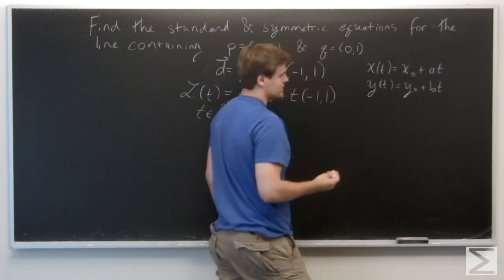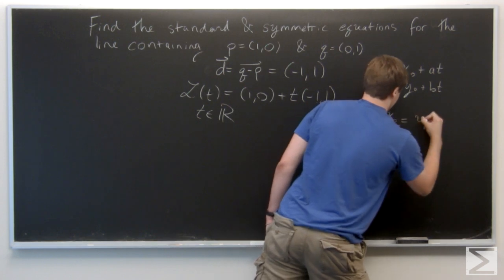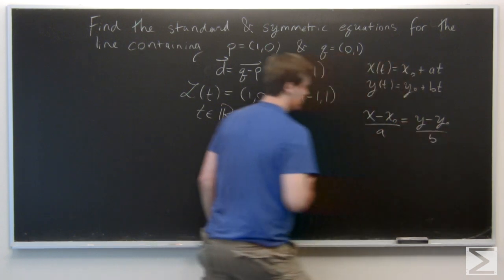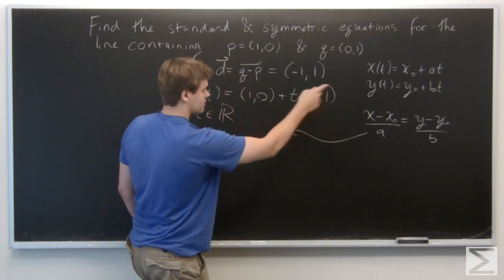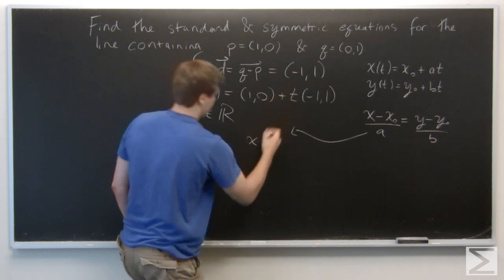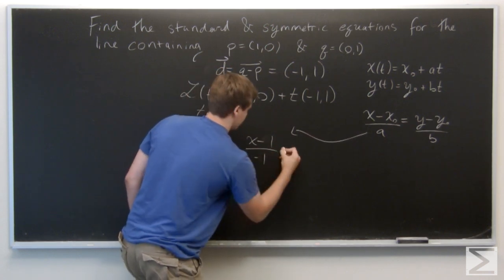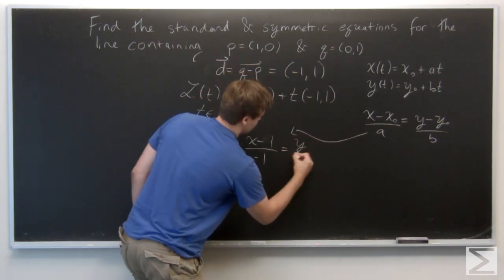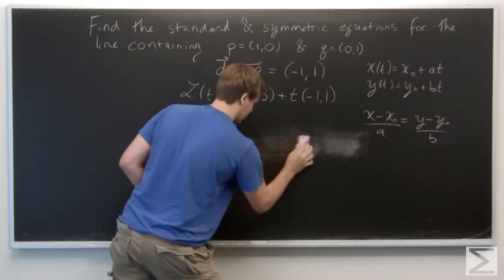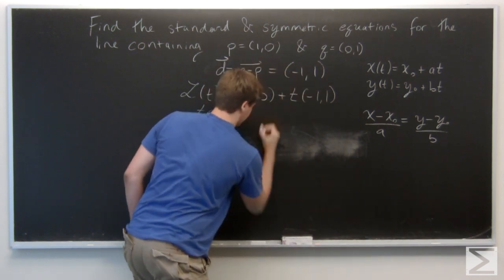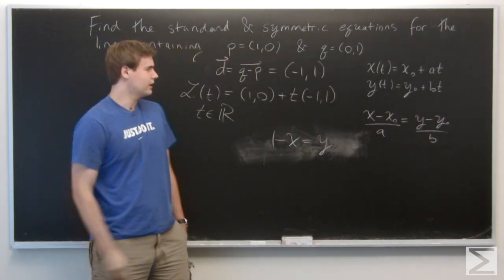The symmetric equations for this line are given by (X - X₀)/A = (Y - Y₀)/B. Translating that to our problem, we have (X - 1)/(-1) = (Y - 0)/1. Simplifying, that gives us 1 - X = Y. That's the symmetric equation, and we already have our standard equation.